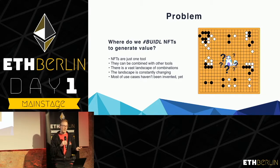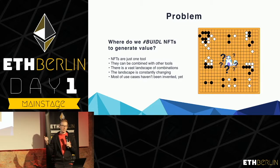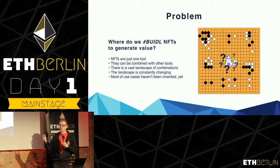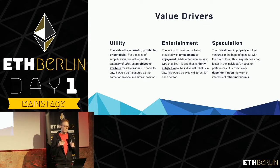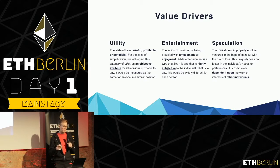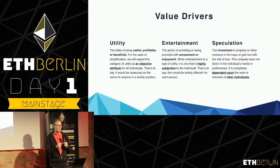NFTs are just one tool, and there are many other tools out there in the ecosystem. This vast landscape of combinations is constantly changing, and therefore a lot of the use cases for NFTs haven't been created yet. If we're looking to decide where to create value with NFTs, it's important to understand what value drivers are. We can break them down into three rough categories. The first is basic utility — meaning the NFT would be useful, profitable, or beneficial in some way — and this is an objective attribute, meaning that profitability or usefulness would be the same for anybody in a similar situation.